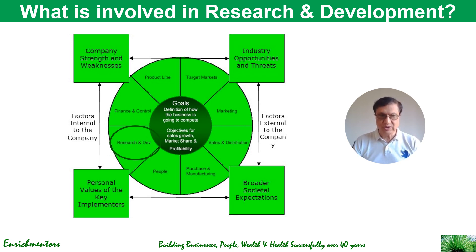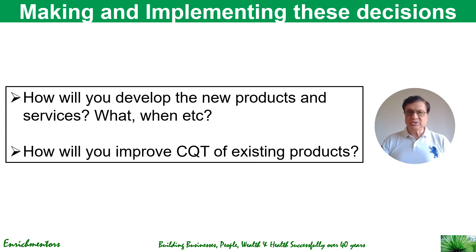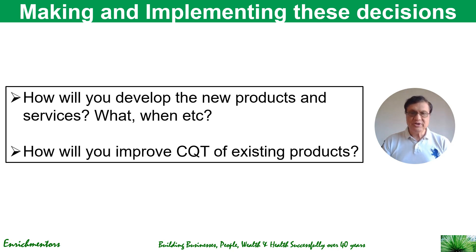So what questions are the ones that need to be answered primarily in doing research and development for managing a business successfully? Basically you need to answer two questions. One: the primary focus of the R&D team is to develop new products and services. What needs to be decided is what new products will be developed — this decision comes from the business strategy — when these new products are to be developed and given to marketing for introduction, and how you would go about developing these new products.